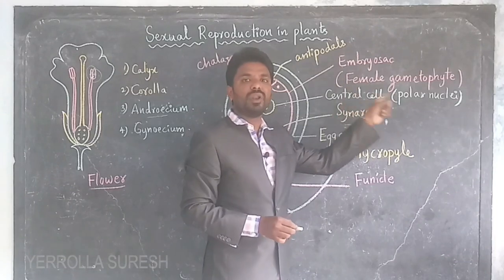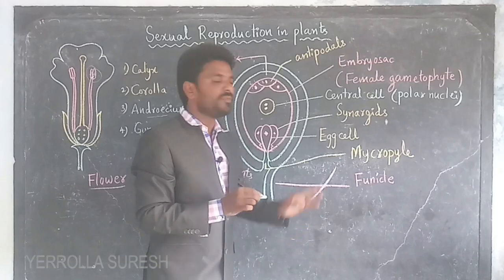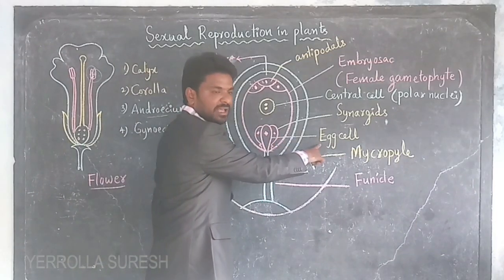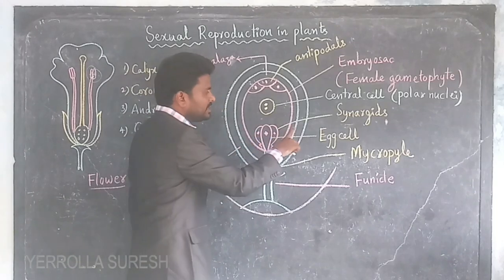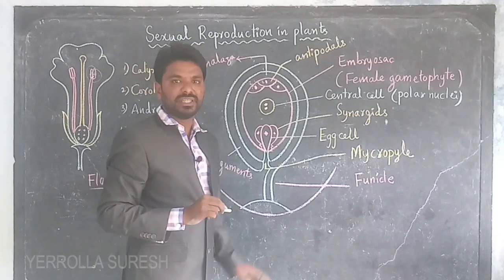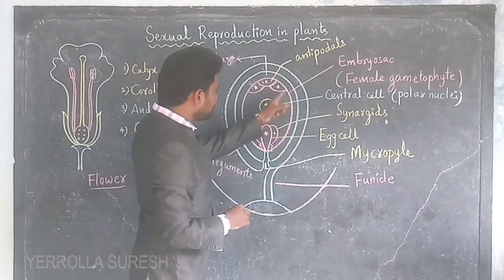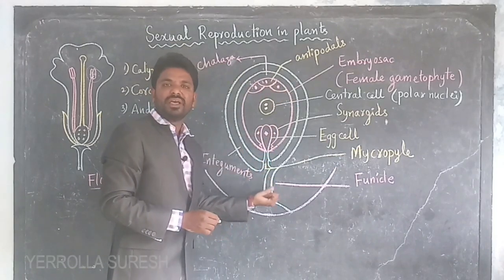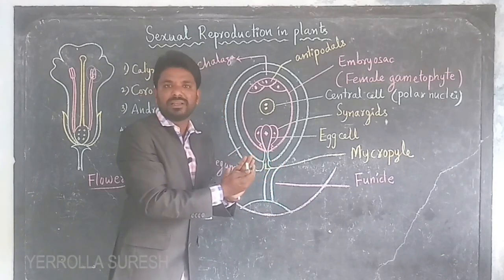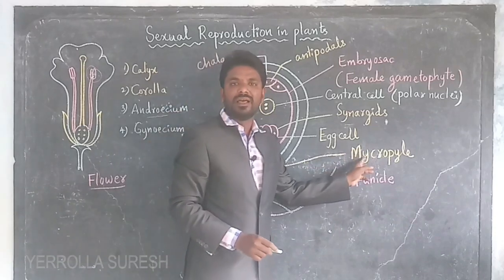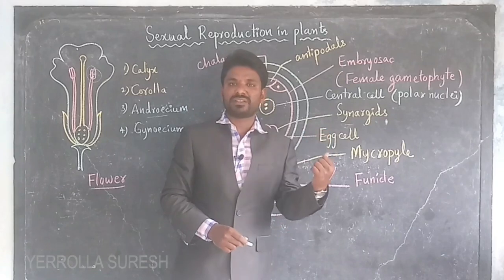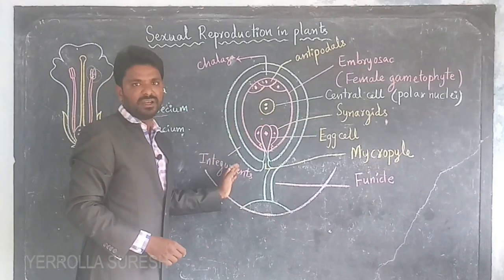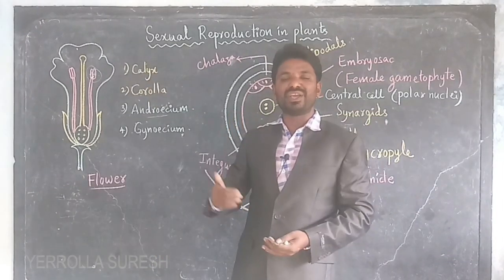At the lower part of the embryo sac, three cells are present. The middle cell is the egg cell, which has a nucleus. The two cells on either side of the egg cell are called synergids — they are helper cells that assist the egg cell at the time of reproduction. The lower side of the ovule has an opening called the micropyle, which is a gap left by the integuments. This hole called the micropyle helps in the process of reproduction.